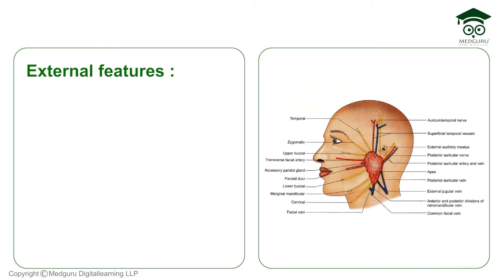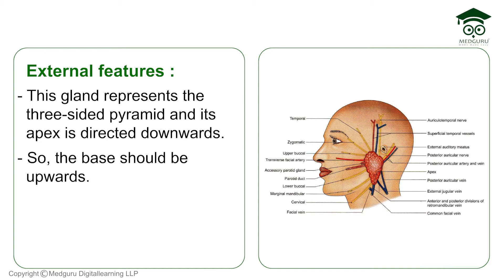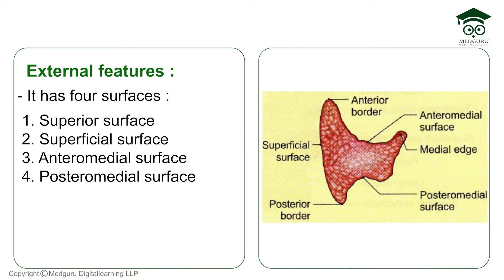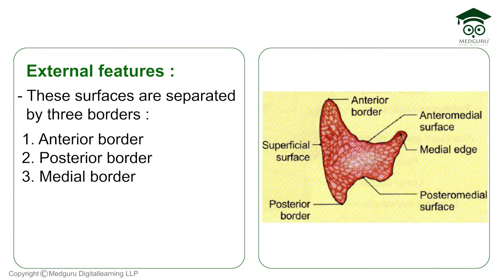The parotid gland represents a three-sided pyramid whose apex is directed downwards, meaning its base is on the top. The gland has four surfaces: superior surface, superficial surface, anteromedial surface, and posteromedial surface. These surfaces are separated by three borders: anterior border, posterior border, and the medial border.